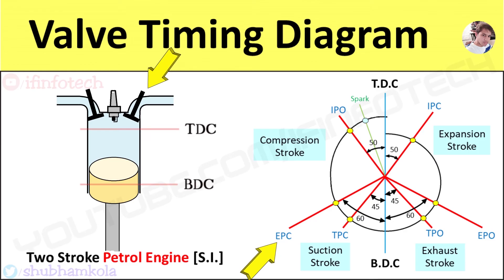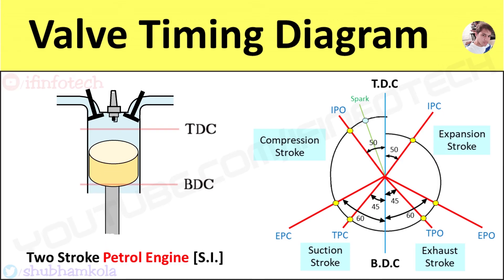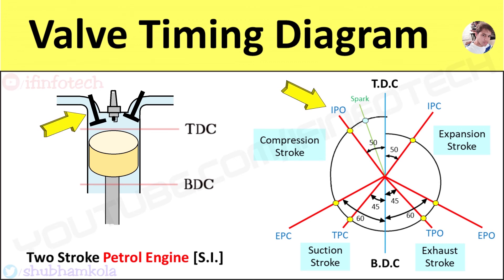This is done to suck fresh air through the transfer port and exhaust burned gases through the exhaust port. Compression starts when the piston moves from BDC to TDC. The pressure inside the compression chamber increases due to the compression stroke, and the cycle starts again by opening the inlet port at 50 degrees before TDC.